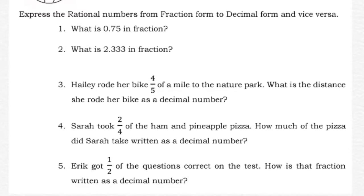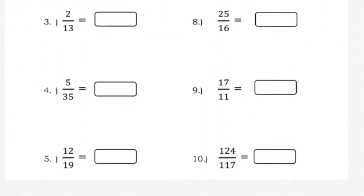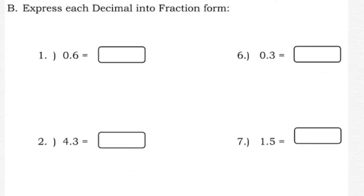Under 'What I Can Do': express the rational numbers from fraction form to decimal form and vice versa — there are five questions to answer. Then for Assessment: Part A, express the given fractions into decimal form, rounding off answers to the thousandths place (three decimal places). Part B, express each decimal into fraction form — there are ten items.